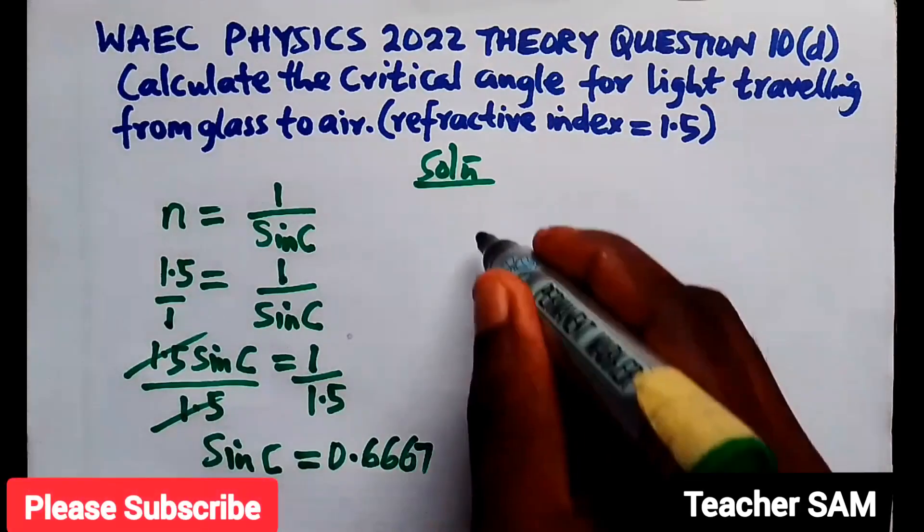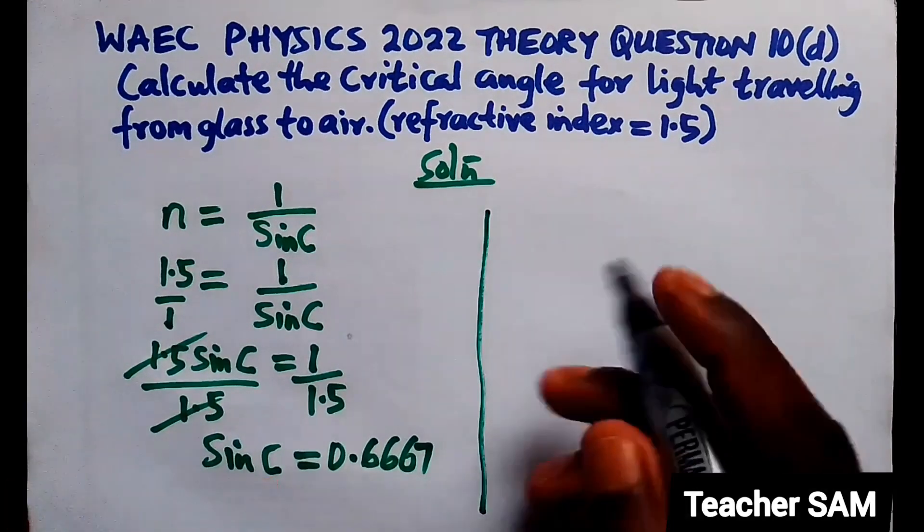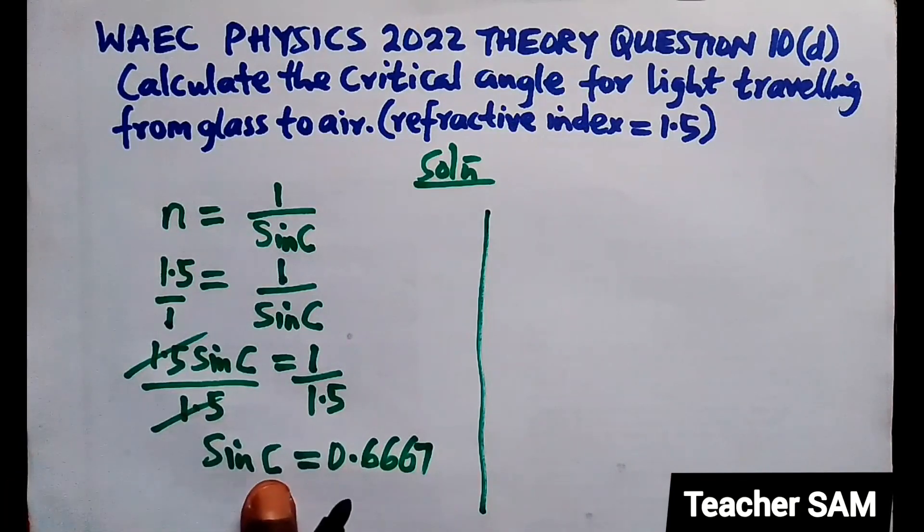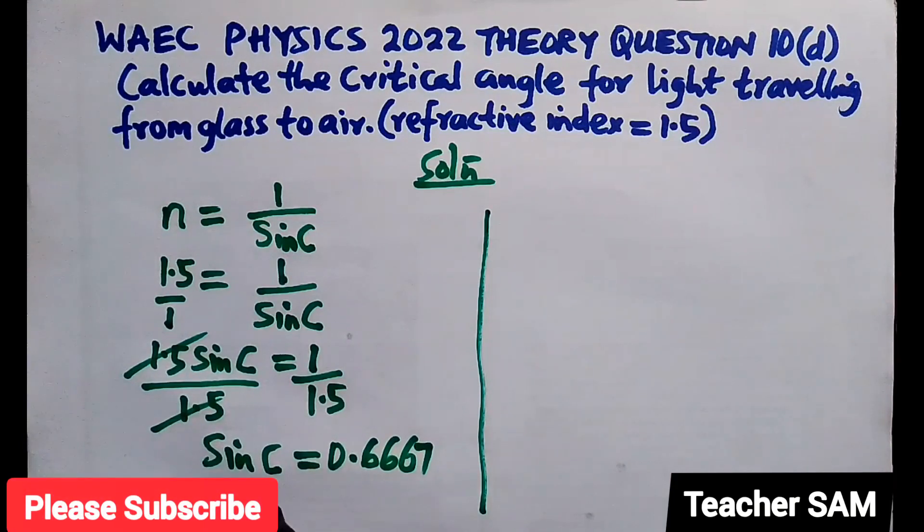We have sine c equals 0.6667, but we are looking for the critical angle c. So c will equal sine inverse of 0.6667.